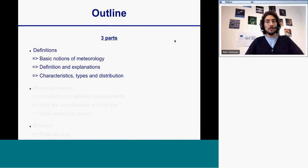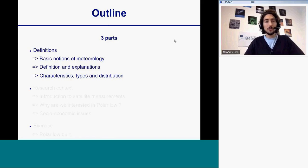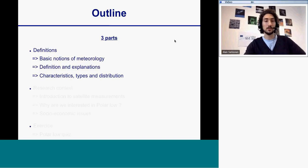The lecture will be in three parts. The first one is about definitions and will mainly give basic notions of meteorology. Then I will define and explain what a polar low is exactly. I will finish this first part with the characteristics, types, and distribution of polar lows for the Nordic axis area. Then I will give the research context, and I will finish with a small exercise — a quiz about polar lows.